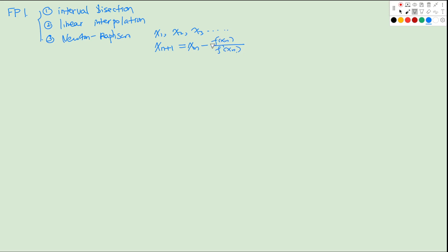Today, we are going to look at another type of iteration method called fixed point iteration. So what does fixed point iteration mean? Let me give you one example.